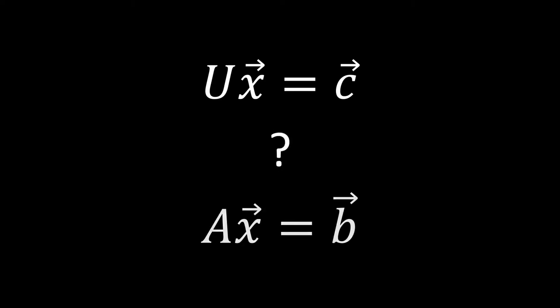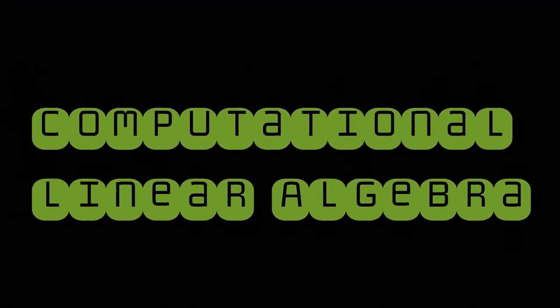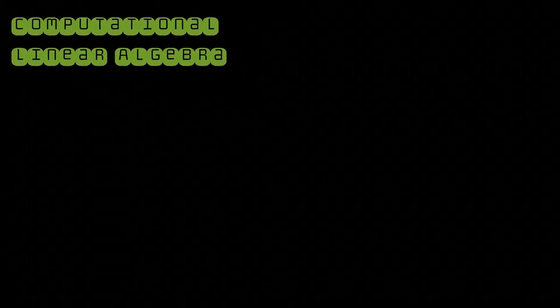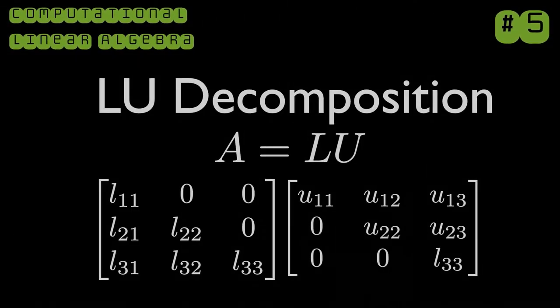But we have a little bit of a problem mathematically here. Why does the solution to the upper triangular UX equals C system satisfy the AX equals B system? That's what we're going to hope to answer today in this fifth episode of Computational Linear Algebra. We are going to discuss the LU decomposition.